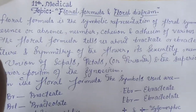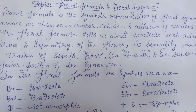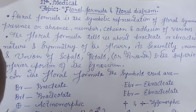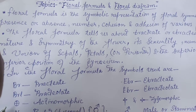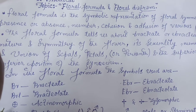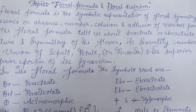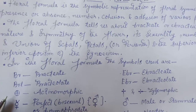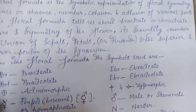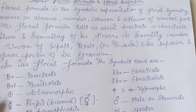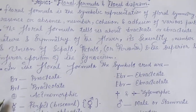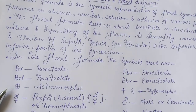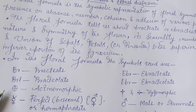The floral formula tells us about bracteate or ebracteate nature and symmetry of the flower, its sexuality, number and union of sepals, petals or perianth, and the superior and inferior position of the gynoecium.